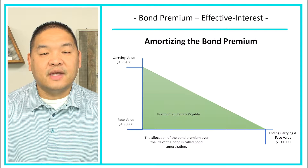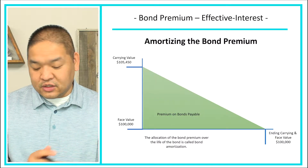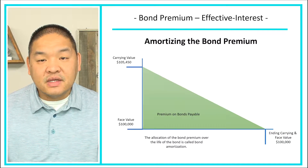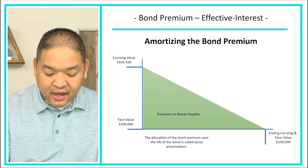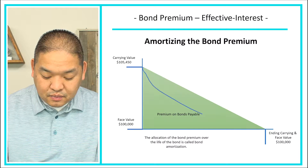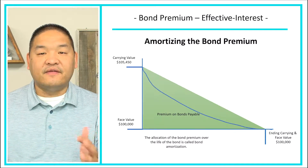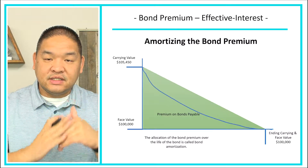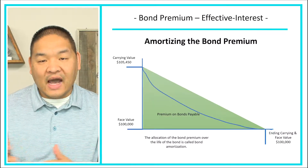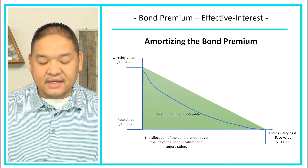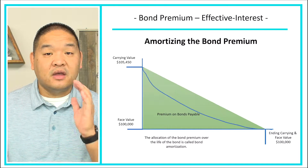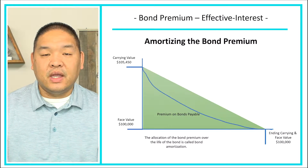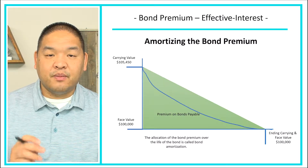What we were doing previously is basically a straight line — allocating evenly. What we're going to be doing in this lesson is more of a curve. So we're not going to have a flat straight line; we're actually going to dip that line as we get to the ending carrying value. Because of that, we have to use another method to calculate how much interest expense we are allocating to each period.